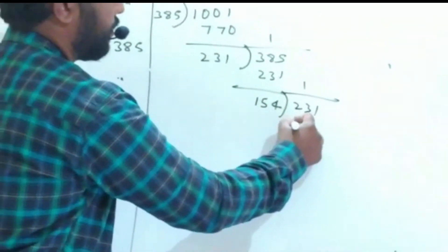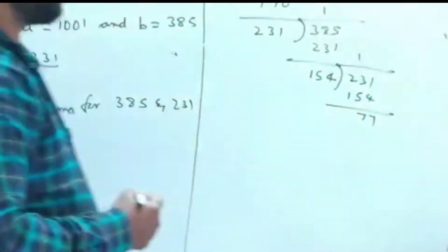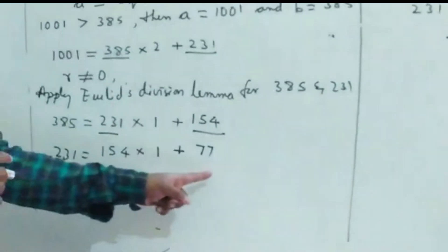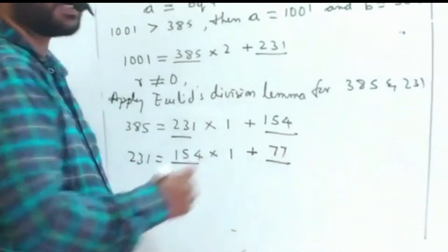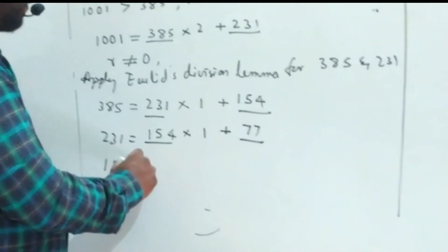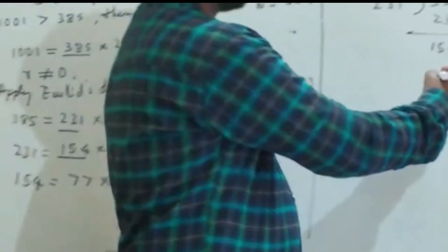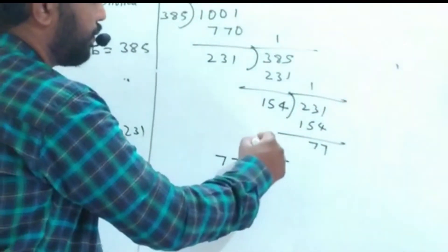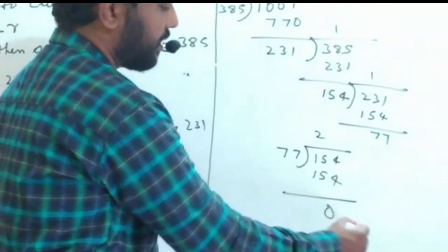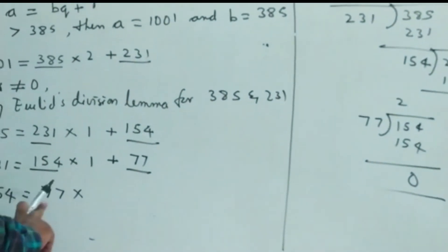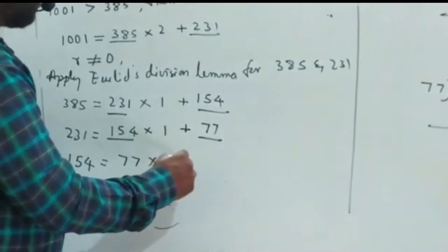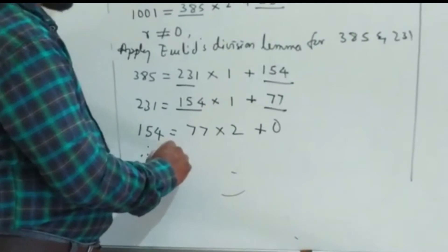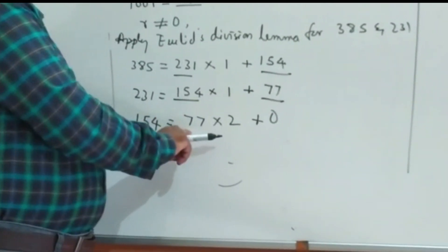Now applying the lemma to 231 and 154: 231 equals 154 into 1, which gives 154. Subtracting, the remainder is 77. So 231 equals 154 into 1 plus 77. Again the remainder is not zero, so we continue. Next: 154 equals 77 into 2, which gives 154, and the remainder is 0. So 154 equals 77 into 2 plus 0.